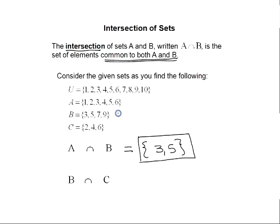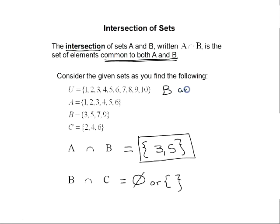Now let's find the intersection of sets B and C. The intersection will be the elements common to sets B and C. Set B is {3, 5, 7, 9} and set C has the elements {2, 4, 6}. There are no elements common to these two sets, so the intersection is the empty set. When a pair of sets have no elements in common, those sets are called disjoint sets.